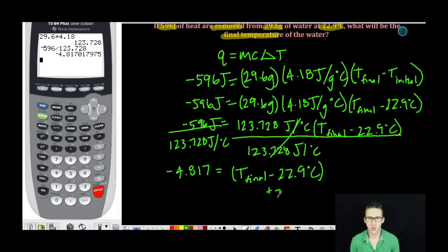The last thing we're going to do here is add 22.9 degrees Celsius to each side. Quick jump over to my calculator. The final temperature is determined to be 18.1 degrees Celsius.